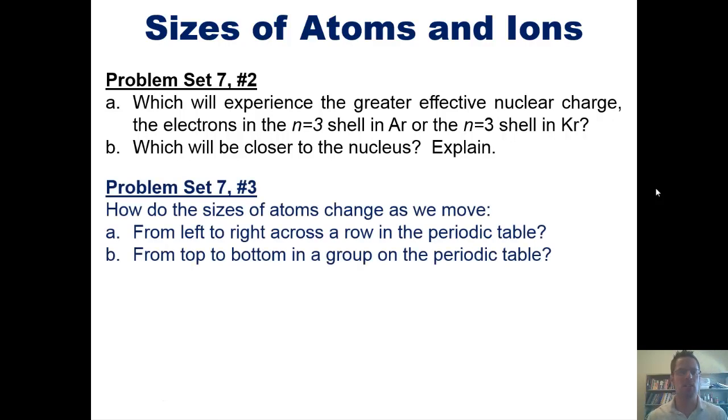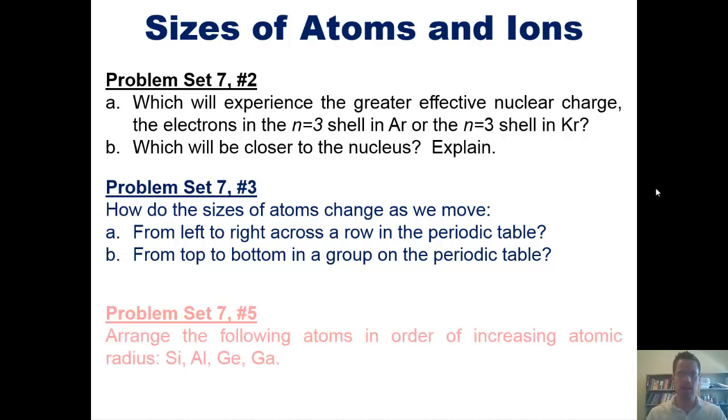Next, how do the sizes of atoms change as we move from left to right across a row in the periodic table and from top to bottom in a group in the periodic table? And arrange the following atoms in order of increasing atomic radius. Now, for these questions, I'm not going to do them, but invite you to do them on your own. For the students who take this class from me, you're welcome to ask me in class. I'll be happy to help you out. If you guys are just watching this on YouTube, however, you're welcome to post questions in the comments section and I will be happy to answer.